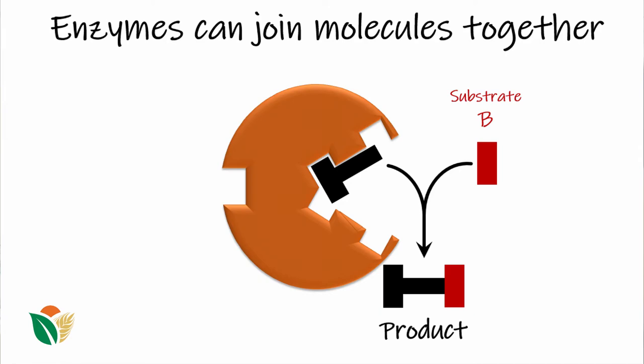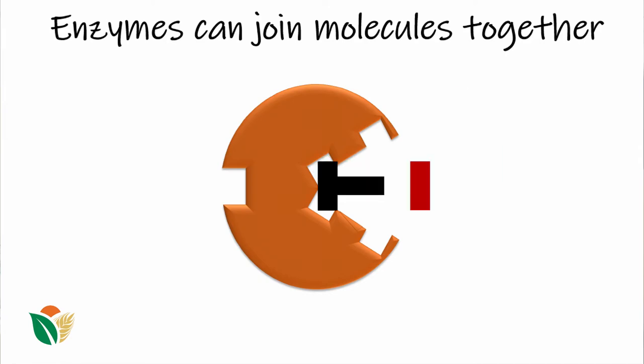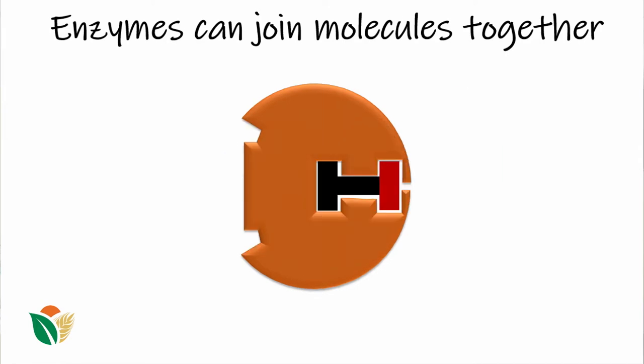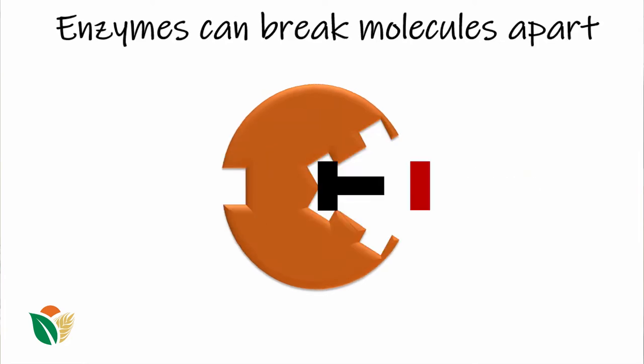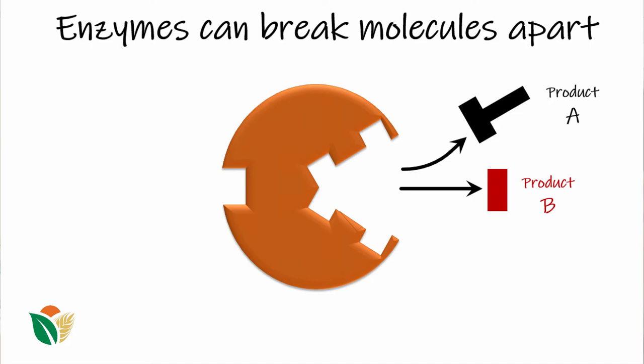Obviously, enzymes, in addition to making molecules, can also break them down. In this case, we see that the enzyme binds the substrate, catalyses it, and then releases two products — product A and product B. So it's quite the reverse of what we've just seen.